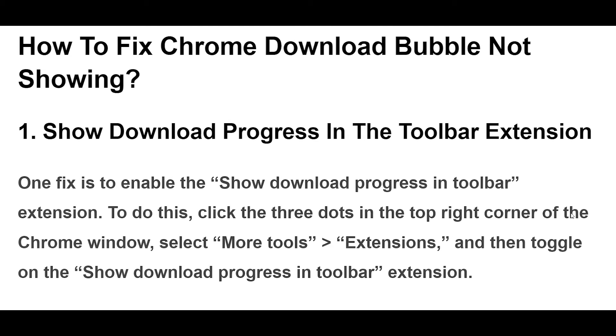click the three dots in the top right corner of the Chrome window, select More Tools, Extensions, and then toggle on the Show Download Progress in Toolbar extension.